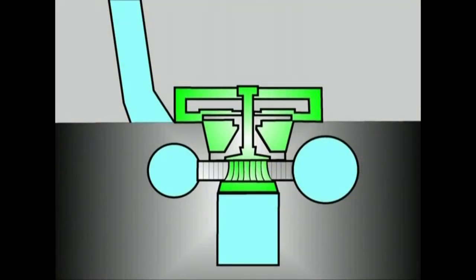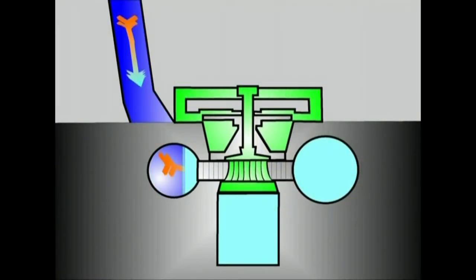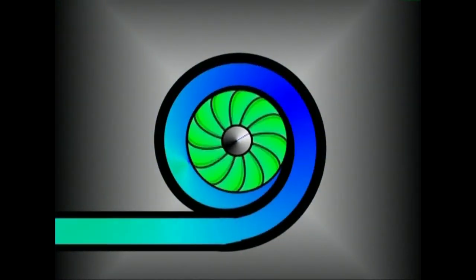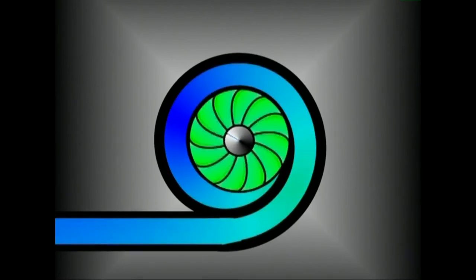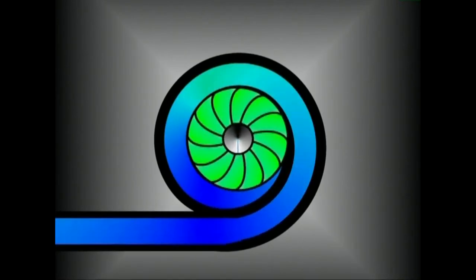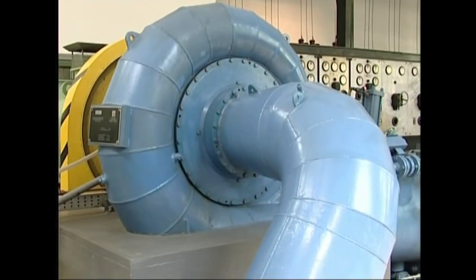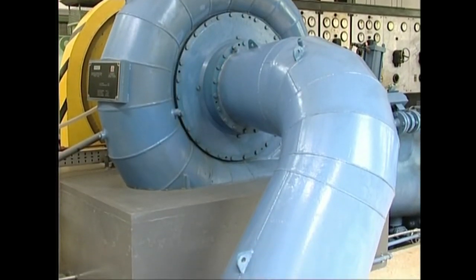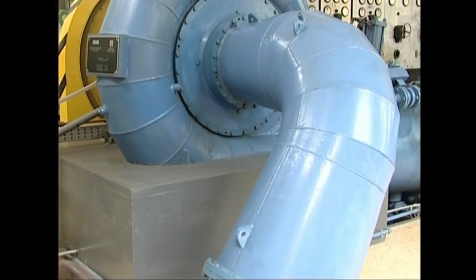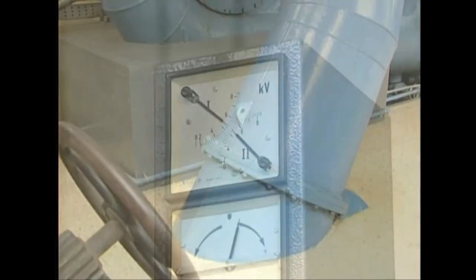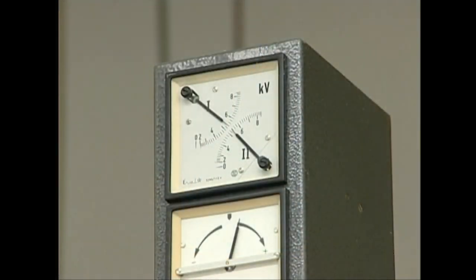Francis turbinetan uraren fluxua axial-erradiala da. Gurpilak forma erradial nabarmeneko besoak ditu. Turbina estutuz doan hodi moduko baten barruan egon ohi da. Gurpila utzi ostean ura itzultze-bidera bideratzen da sorgantze odiaren bidez. Emari ertaineko jauzi ertainetan erabiltzen dira Francis turbinak.